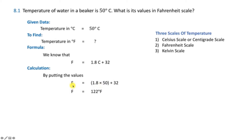In the given data, temperature is in Celsius: 50°C. We need to find it in Fahrenheit. The Fahrenheit formula is F = 1.8 × C + 32. So, 1.8 × 50 + 32 = 90 + 32 = 122 Fahrenheit.